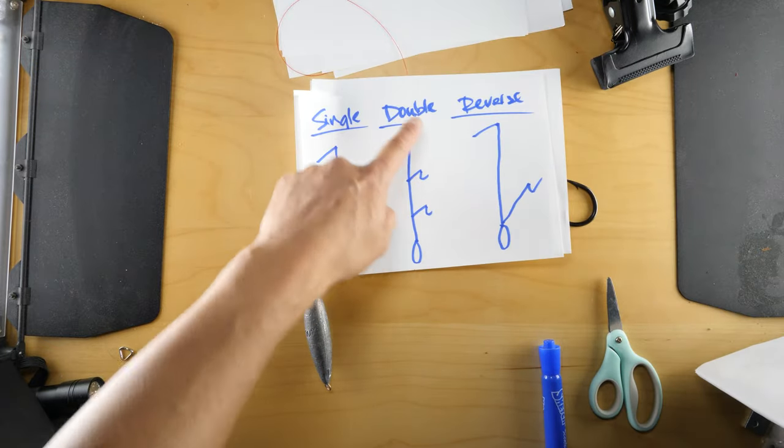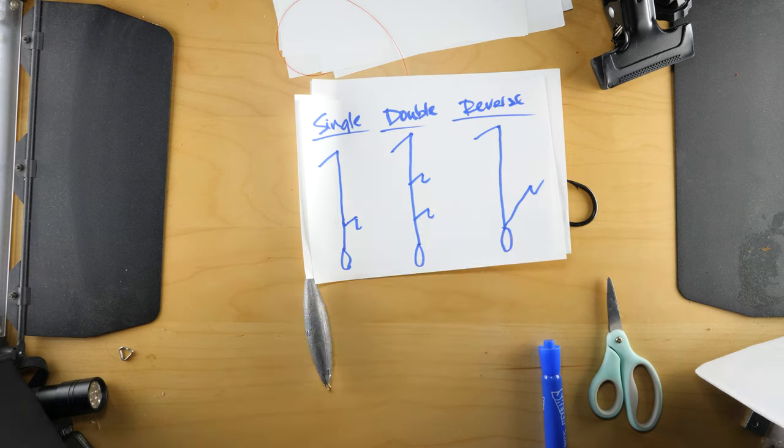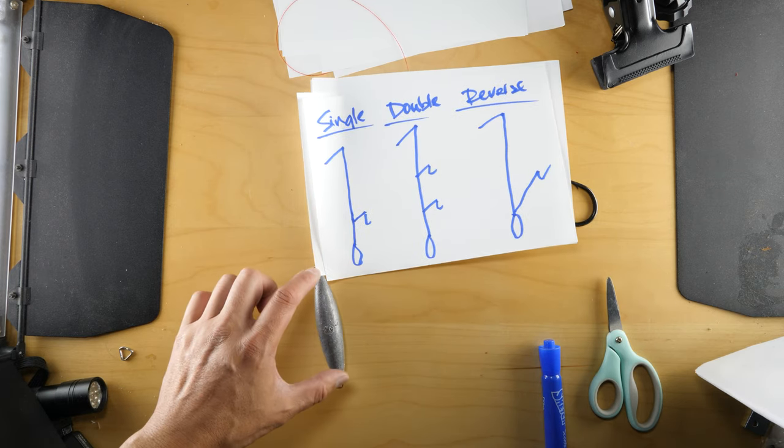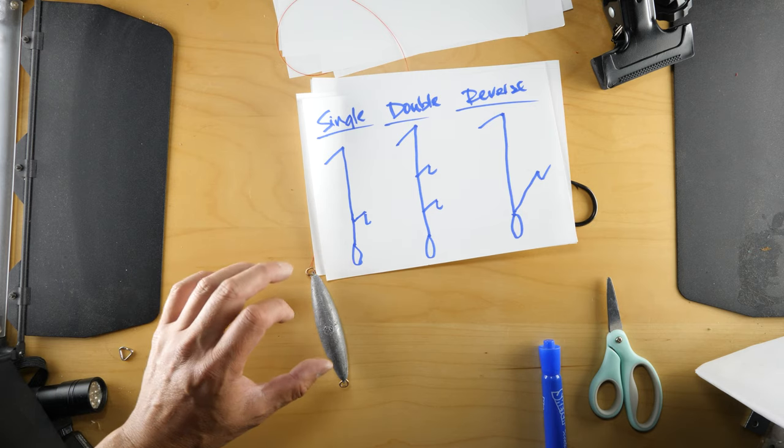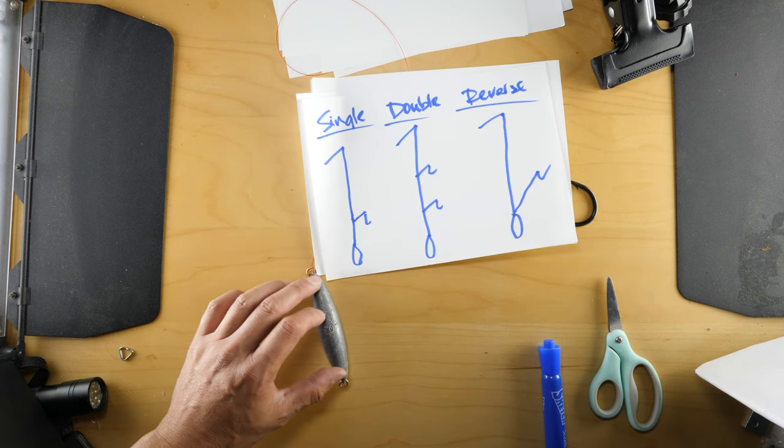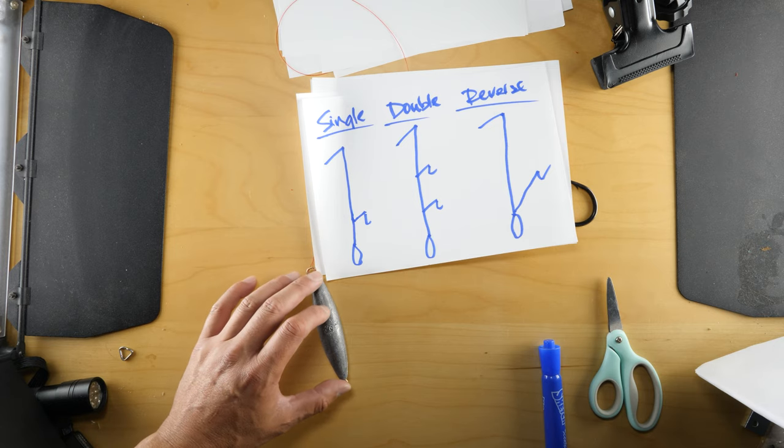So here we go, one last time on this—your single, double, and your reverse. Hope this works for you. And remember, if the current is calm, lower down your torpedo weight to give less resistance for the fish.